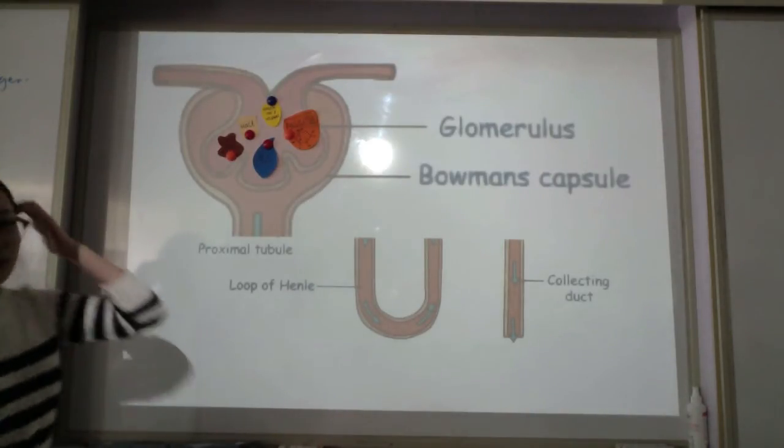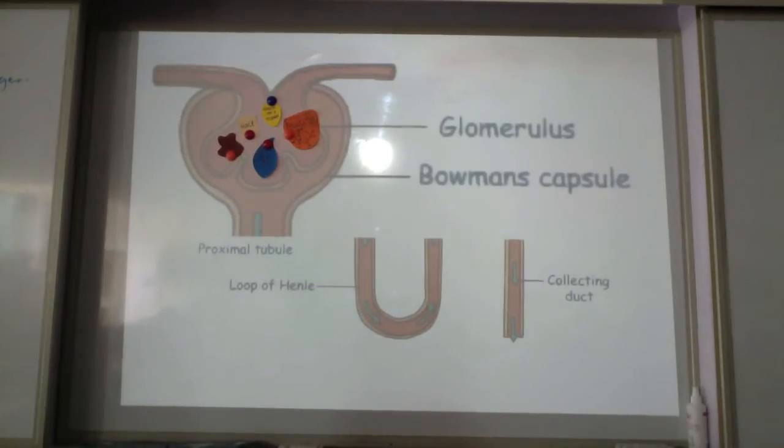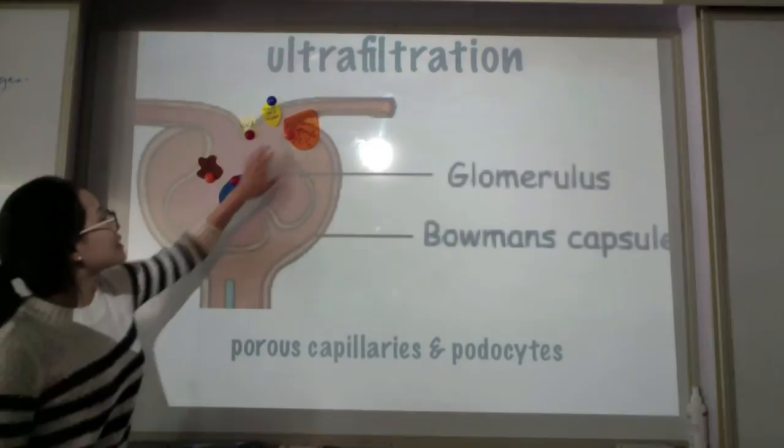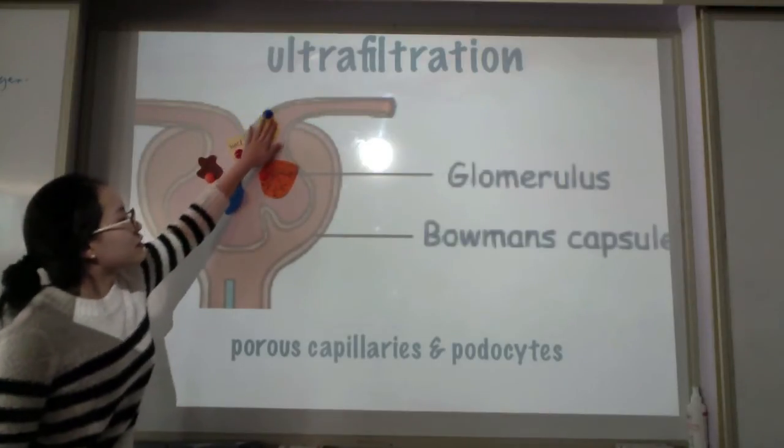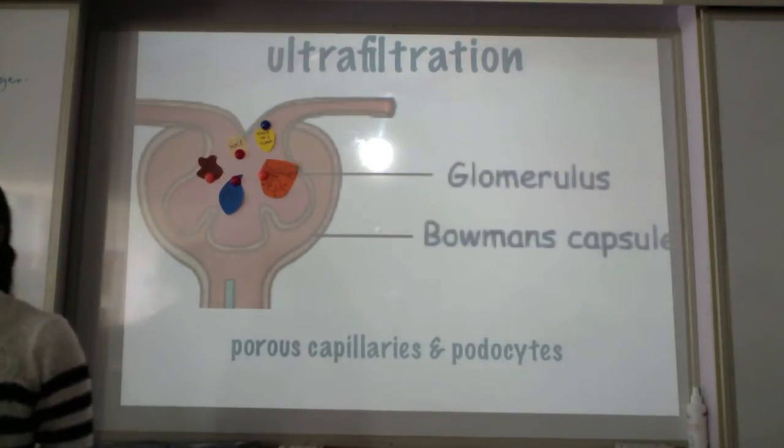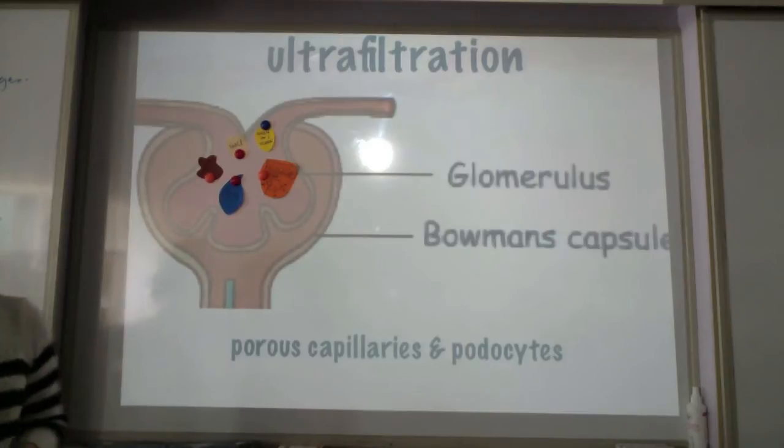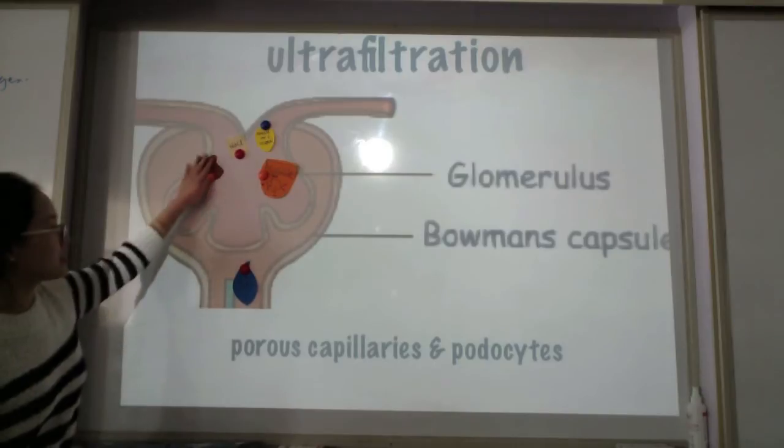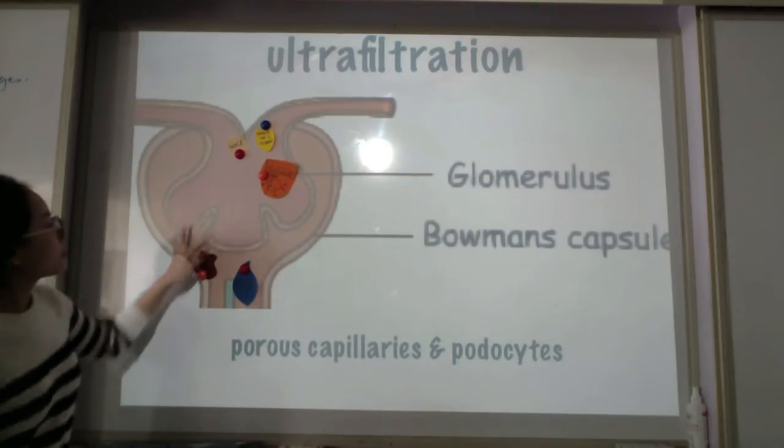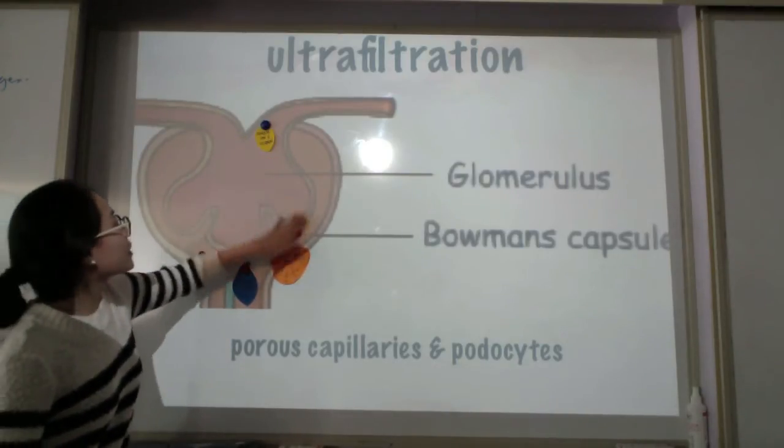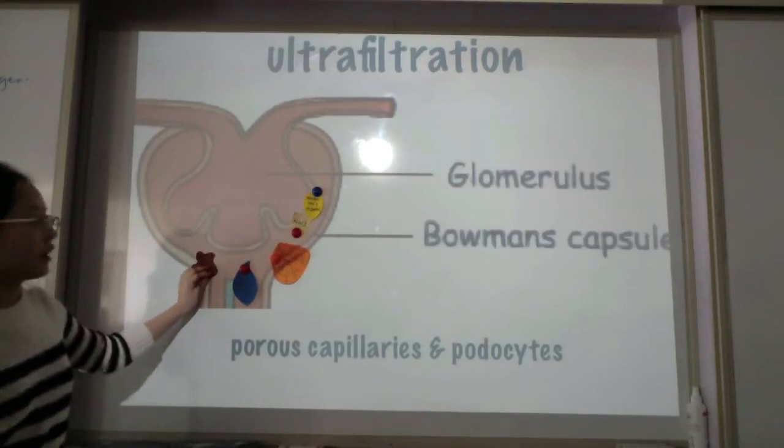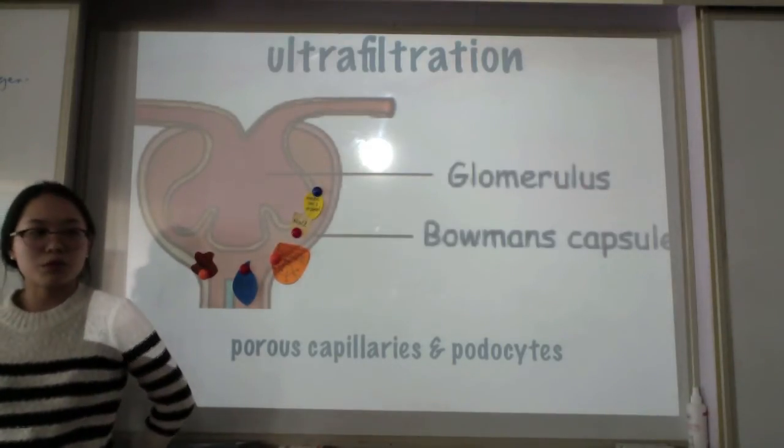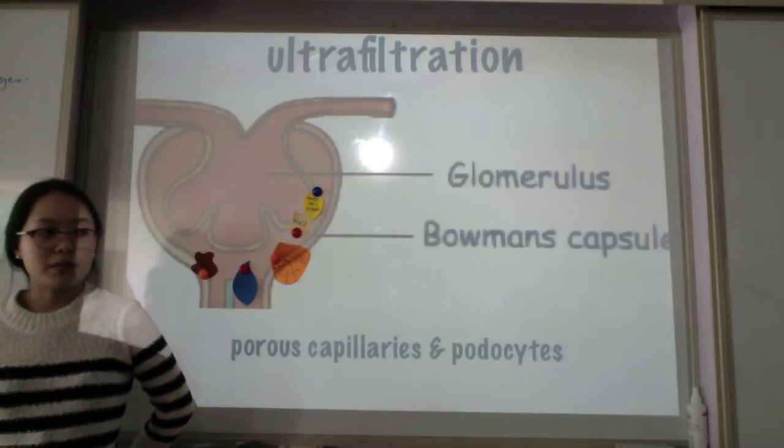So there's going to be ultrafiltration within this glomerulus to the Bowman's capsule and so there's going to be porous capillaries and podocytes that's going to allow ultrafiltration for all of these substances to be absorbed. And all of them are going to be absorbed including the urea. The only things that are left in the glomerulus will be blood proteins such as red blood cells.